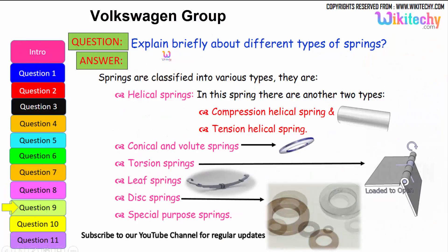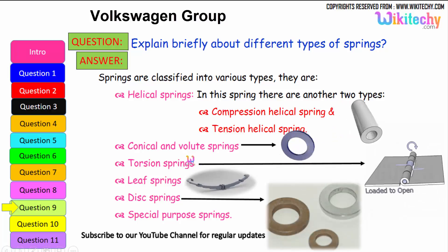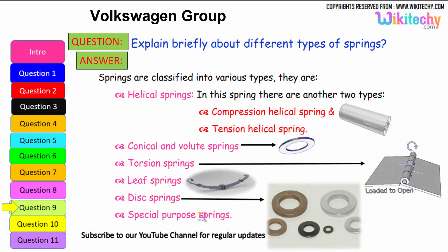Let us see briefly about the different types of springs. Springs are classified into various types. They are: the first one is helical springs. In the springs, there are two types further. One is compression helical spring and the other one is tension helical spring. And the next one is conical volume springs. The other one is torsion springs. Here is the leaf springs. Here is the disk springs. And there are some additional springs which is called special purpose springs. These are all different types of springs available.